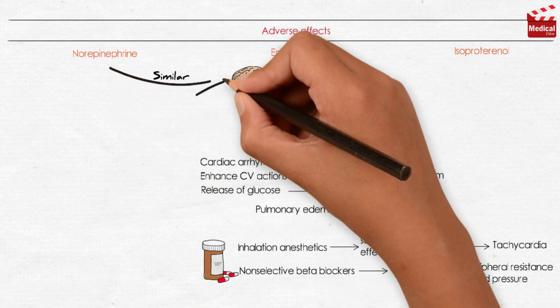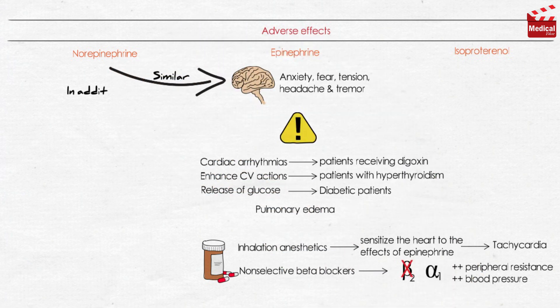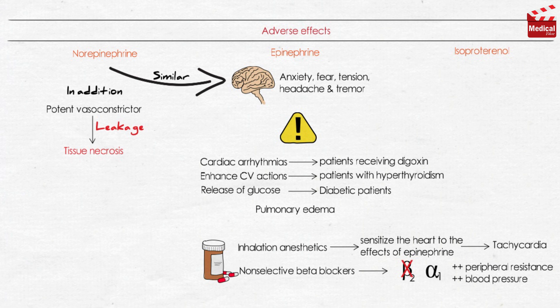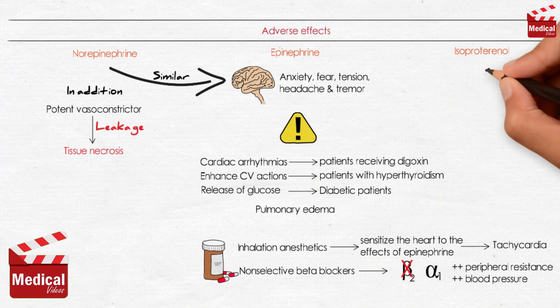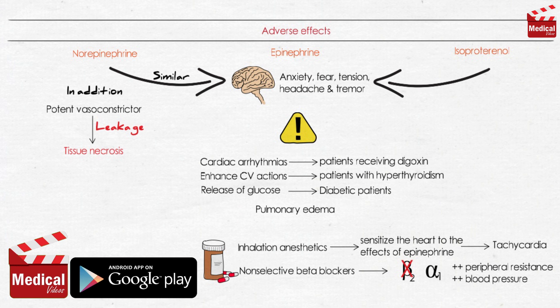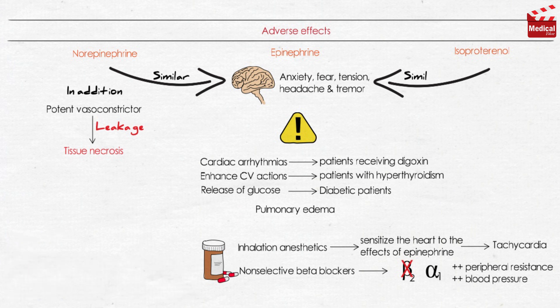Norepinephrine's adverse effects are similar to epinephrine. In addition, norepinephrine is a potent vasoconstrictor, so if leakage of drug from the vessel into tissue surrounding the injection site occurs, it can cause tissue necrosis. It should not be administered in peripheral veins if possible. Alpha receptor antagonists can be used to counteract the impaired circulation produced by norepinephrine. The adverse effects of isoproterenol are similar to those of epinephrine.